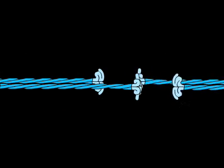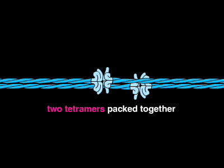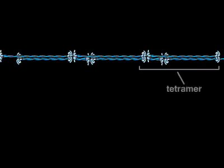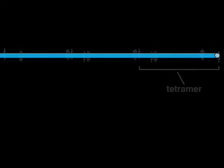Tetramers then link end to end, thus building up one strand of an intermediate filament.